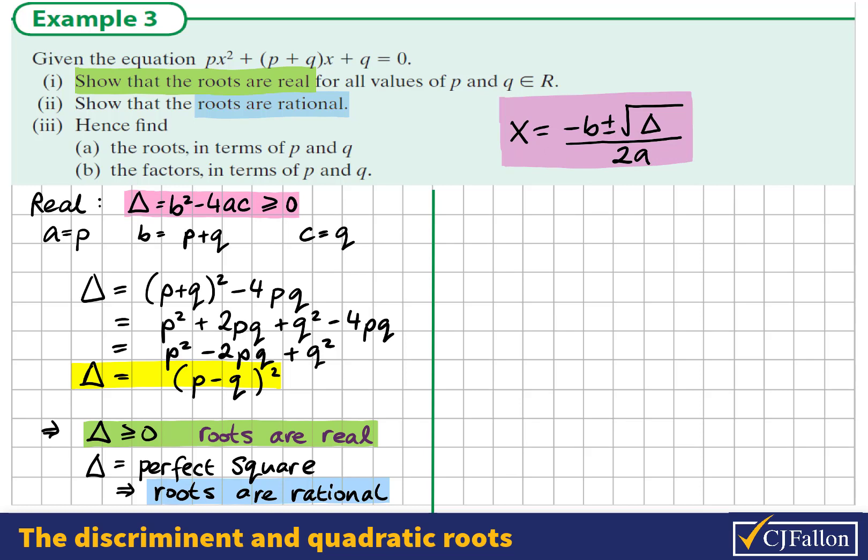So in this question, we see that x = (-(p+q) ± √Δ) / 2p. We already expressed this as a perfect square, (p - q)², all divided by 2p.